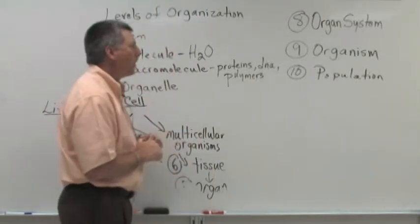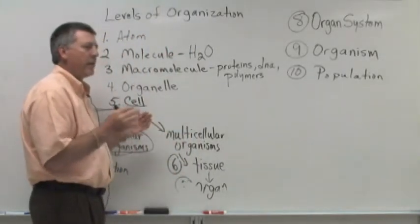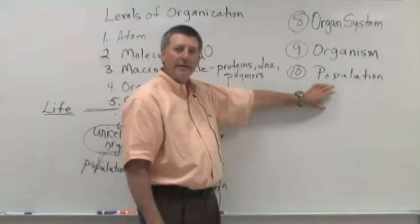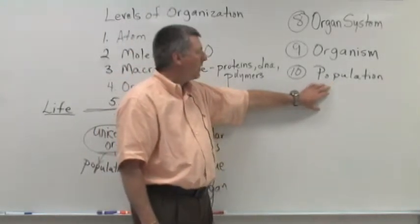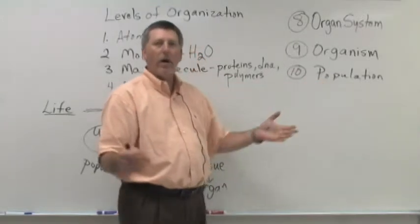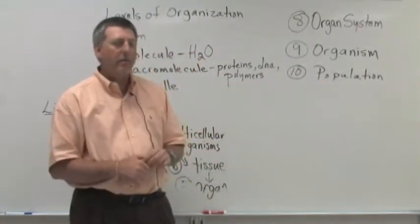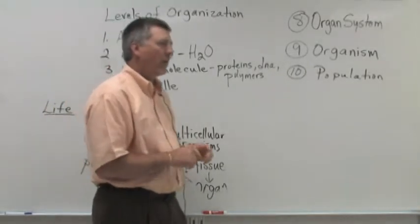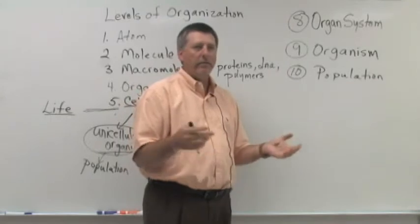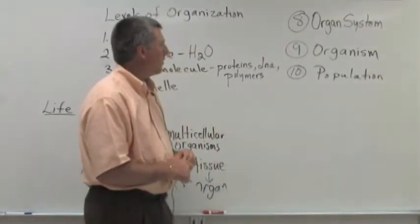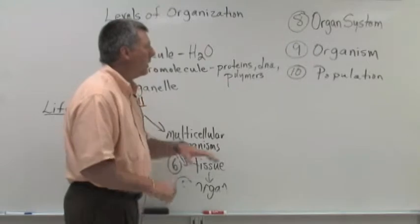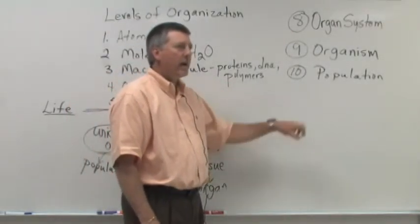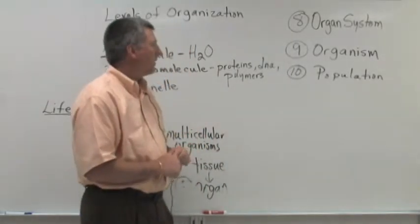The next level of organization comes into place when we start thinking about all the individuals of a particular species in a defined area. So we might talk about all the white-tailed deer in Pilot Mountain State Park or all of the channel catfish in Lake Norman or all of the white oak trees in a particular defined area. So a population consists of all of the individuals of the same type in a defined area.